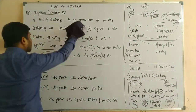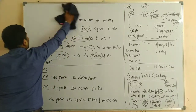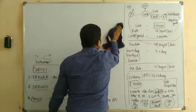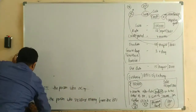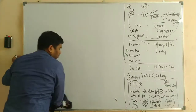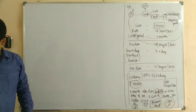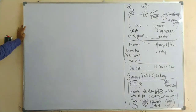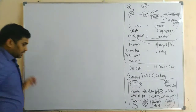To recap: according to the Negotiable Instrument Act, a bill of exchange is an instrument in writing containing an unconditional order signed by the maker, directing a certain person to pay a certain sum of money only to, or to the order of a certain person, or to the bearer of the instrument. The three parties are drawer, drawee, and payee.